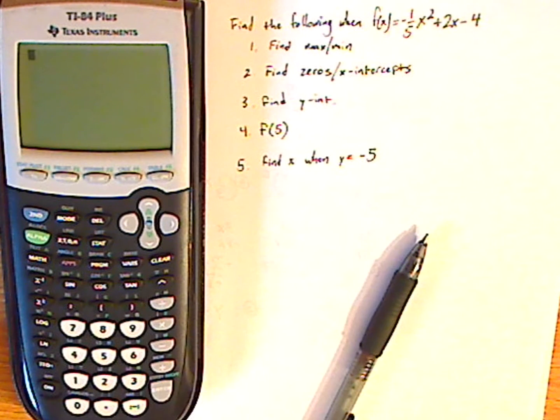Hi, I'm JD, and what we're going to be doing today is using the TI-84 Plus to find the following as related to f(x) equals negative one-fifth x squared plus 2x minus 4. So if you would, pause the video and see if you can try to do these on your own.